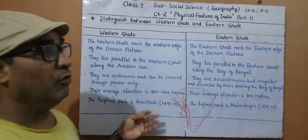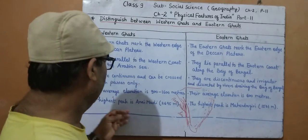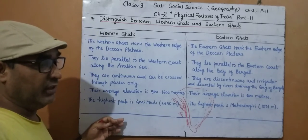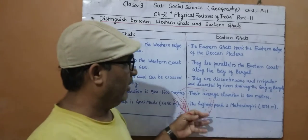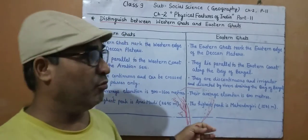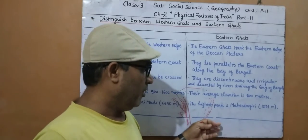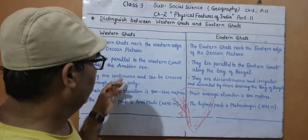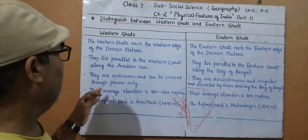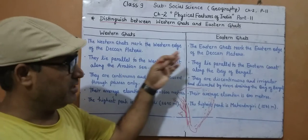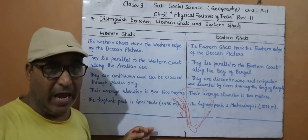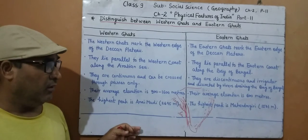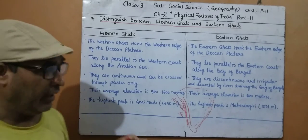The highest peak in the Eastern Ghats is Mahendragiri at 1501 meters. Other notable hills include Dodabetta. A famous hill station in the Western Ghats is Ooty. In the Eastern Ghats, there are not so many hill stations — some exist but are not very notable. We have now distinguished between the Western Ghats and Eastern Ghats. I hope you have understood, students. Thank you.